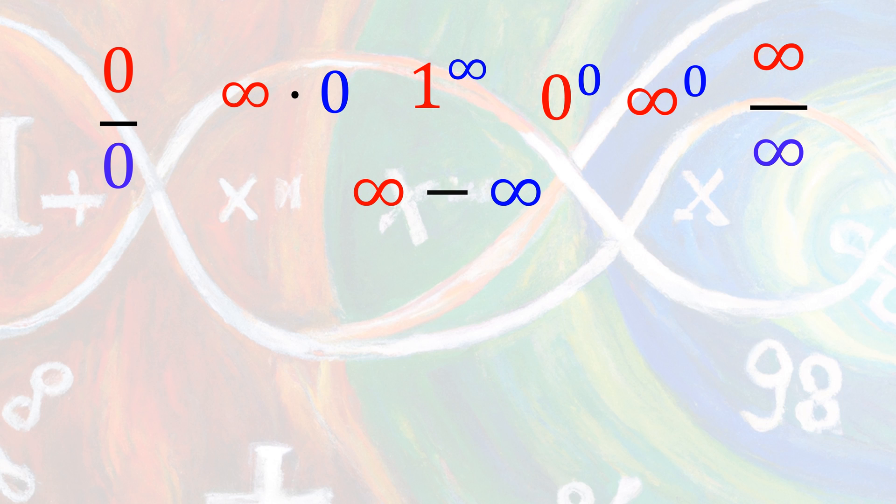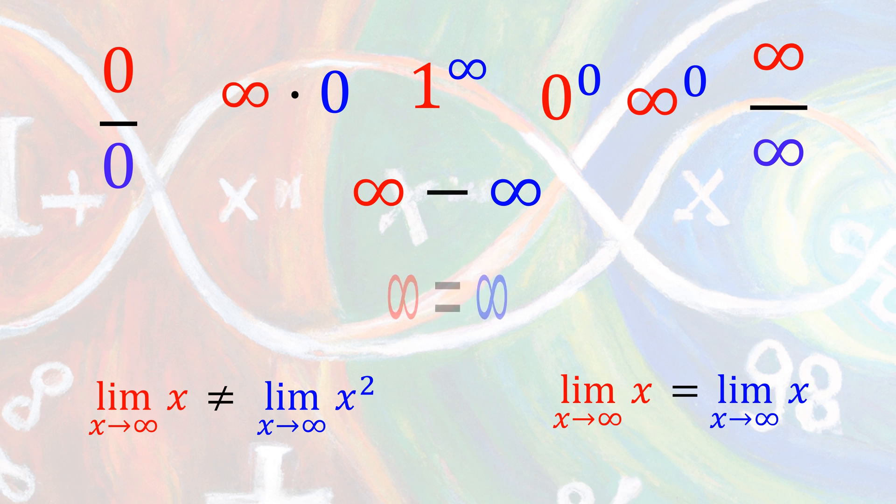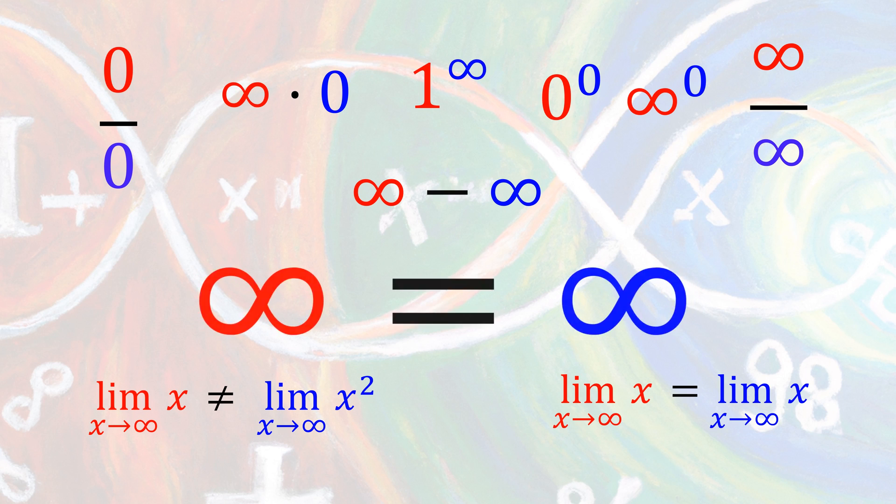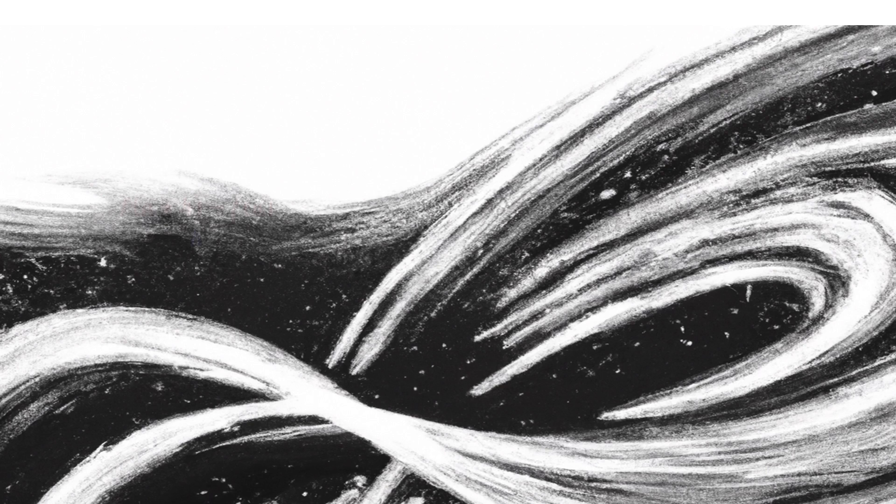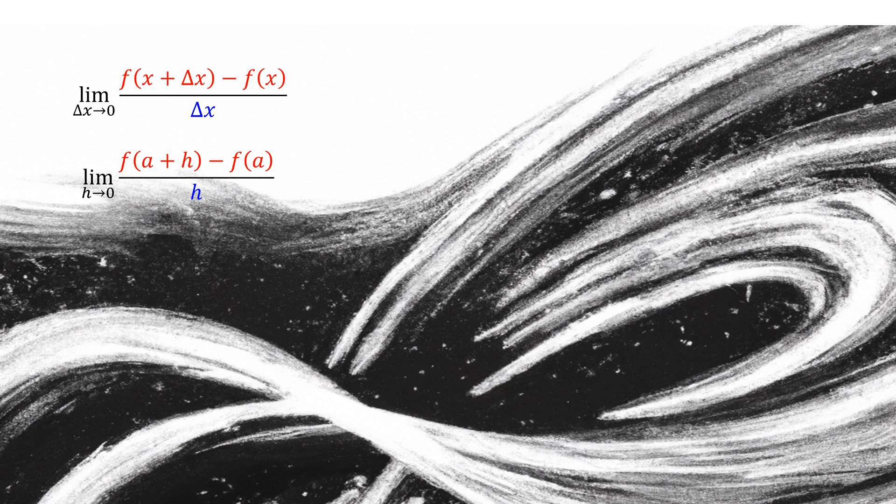Every time we encounter this form, we must carefully examine them at their limit to find a solution. This is the definition of the derivative, which later becomes an essential part of mathematics known as Riemann hypothesis.